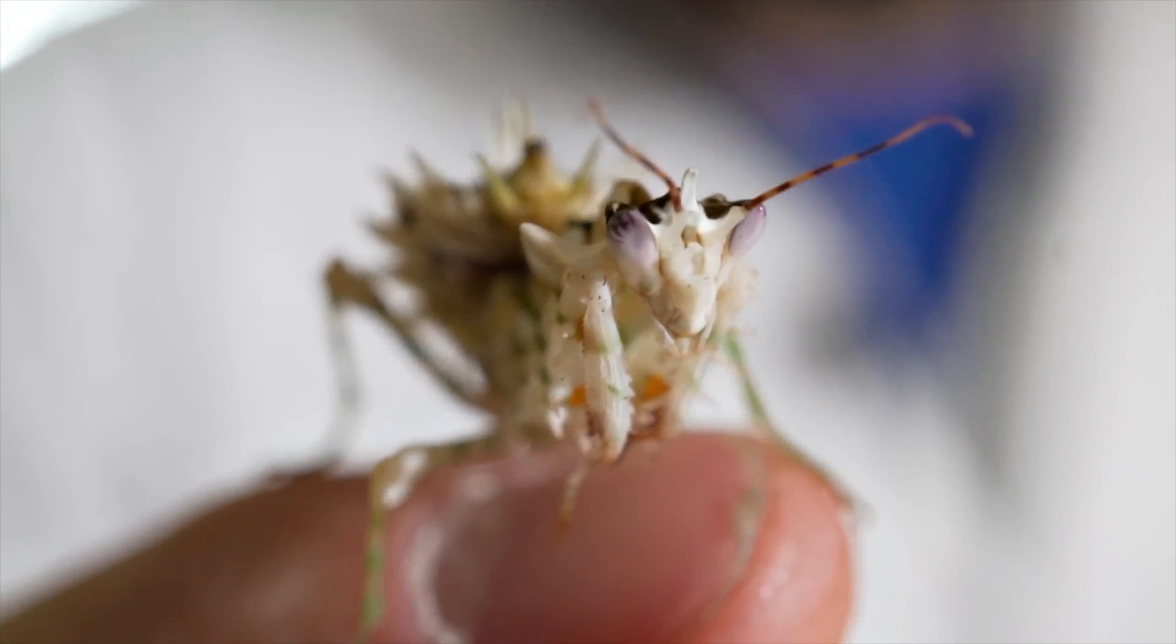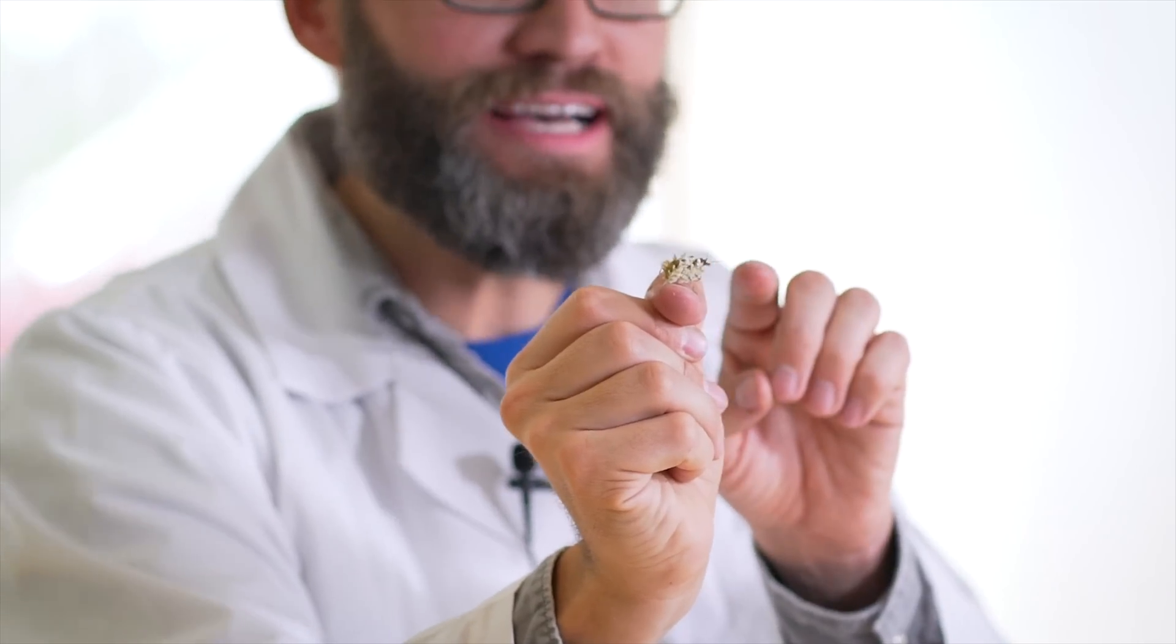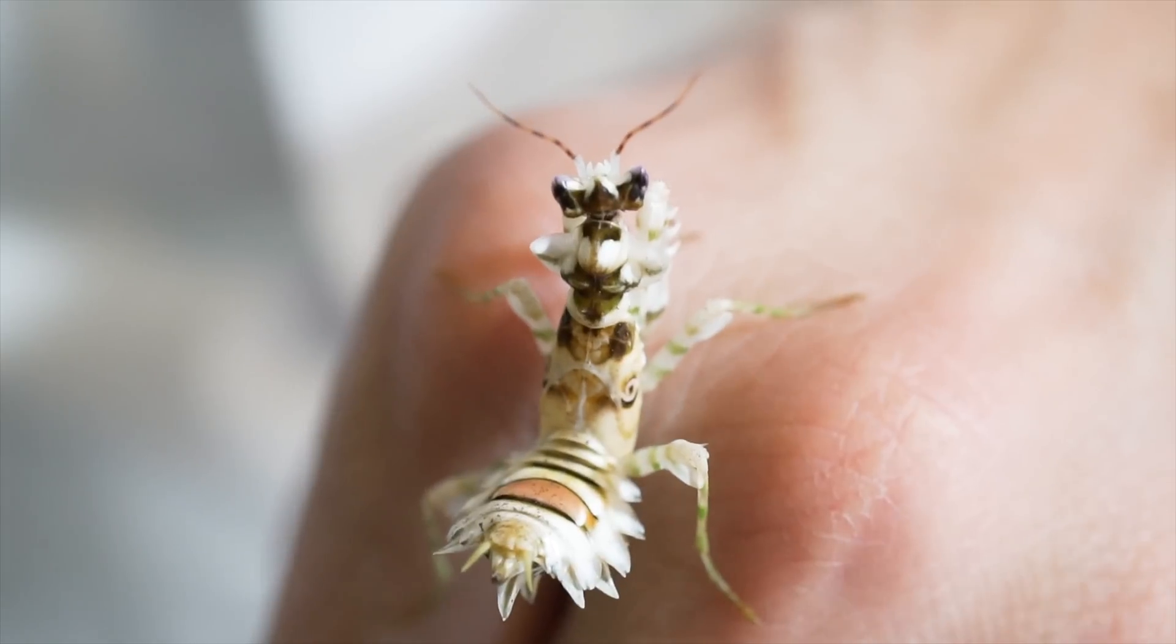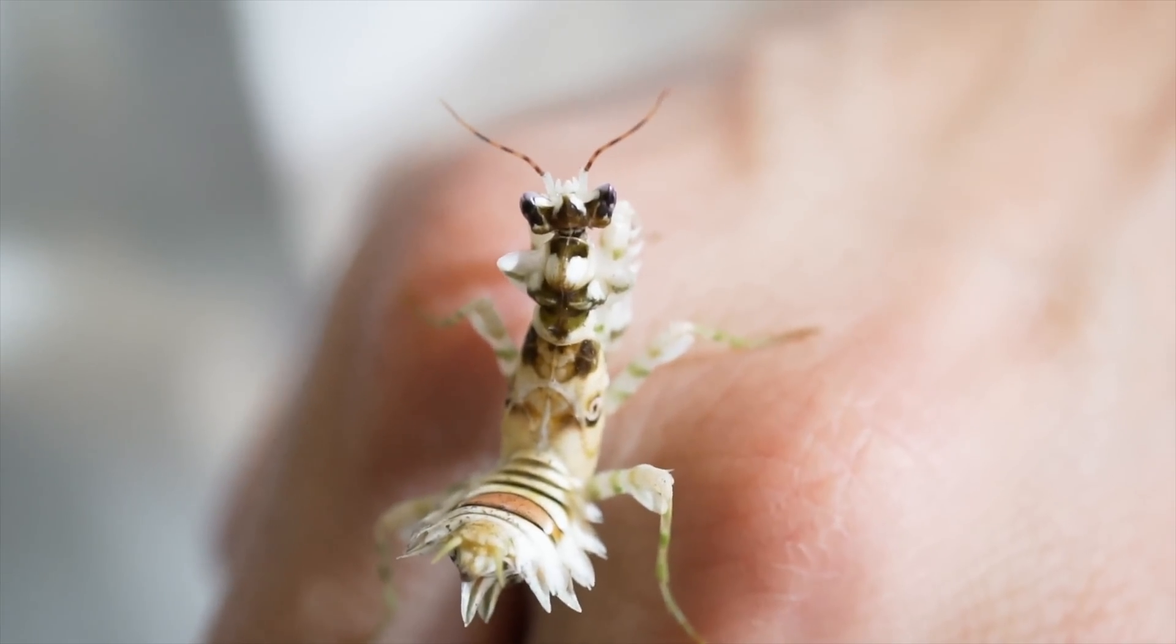So unlike some other insects like katydids that use their camouflage to blend in and not get eaten, these guys have what's known as aggressive coloration. They want to not be seen so they can reach out and grab things to eat them. They have all these little things sticking off their body. It looks like flower petals and they sit there and wait.